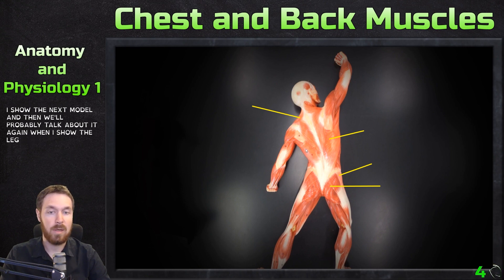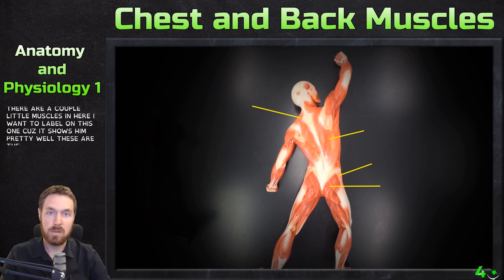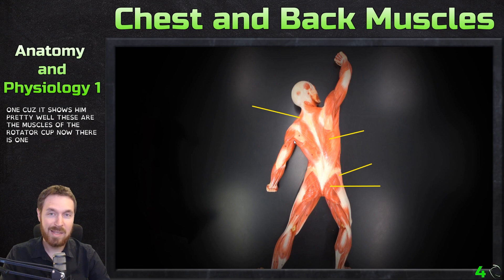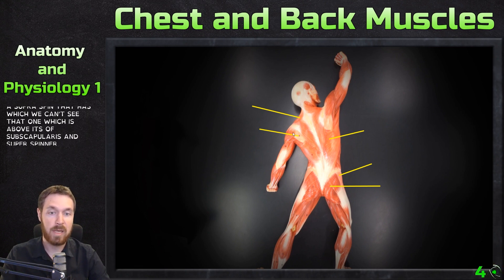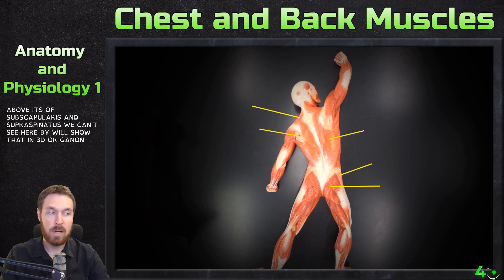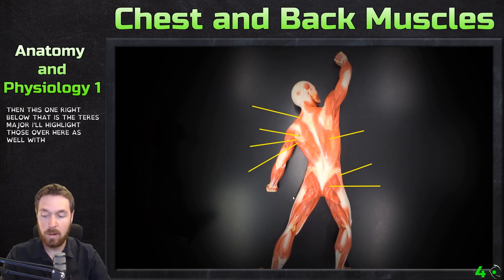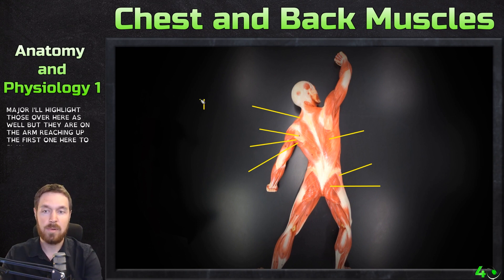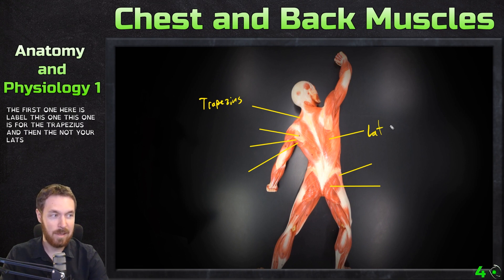There are a couple of little muscles here I want to label because this model shows them pretty well — these are the muscles of the rotator cuff. There is one we can't see, which is the subscapularis. We can see the infraspinatus right here. There's also a supraspinatus which we can't see — that one is above it. Subscapularis and supraspinatus we can't see here, but I will show those in 3D Organon. Then below the infraspinatus is this little one — the teres minor — and below that is the teres major. Let's label the trapezius and the latissimus dorsi here.